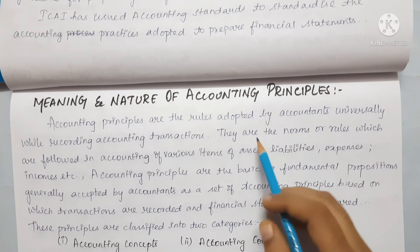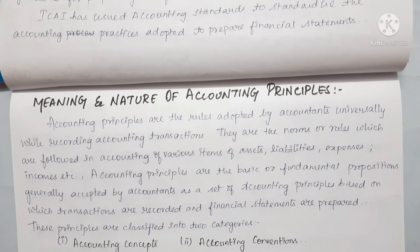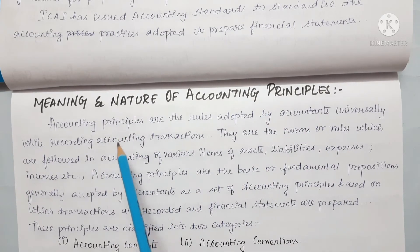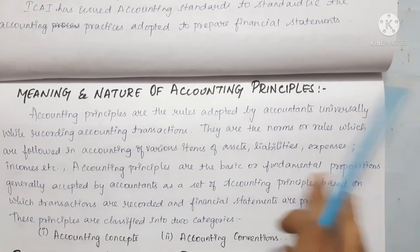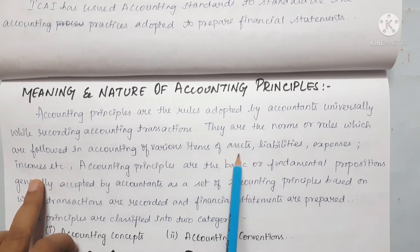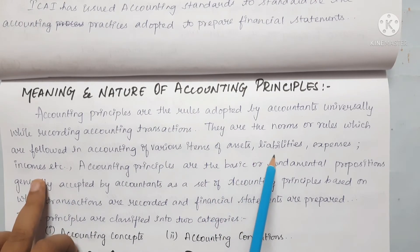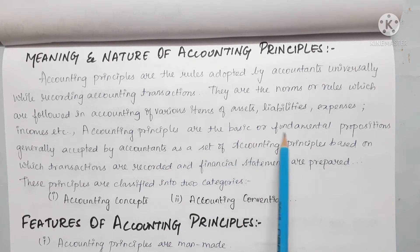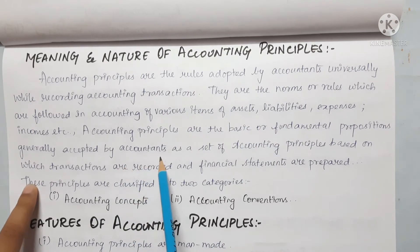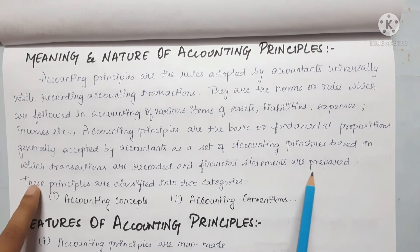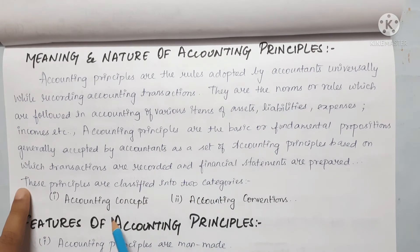The meaning and nature of accounting principles: accounting principles are the rules adopted by accountants universally while recording accounting transactions. They are the norms and rules followed in accounting of various items of assets, liabilities, expenses, and incomes. Accounting principles are based on fundamental assumptions, generally accepted by accountants, as a set of principles on the basis of which transactions are recorded and financial statements are prepared.